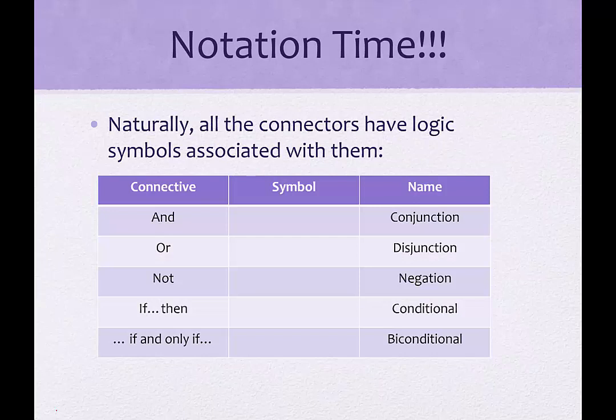So all of the connectors have logic symbols associated with them. And if you watched my videos on set theory, you might remember the notation we use in set theory, you might see a connection between the and and the or with what we saw in set theory. So the symbol for and or the conjunction looks like that. And you might recall in set theory, it looked like that. So it's basically like the same thing, it's just now we have a point instead of a nice rounded top.